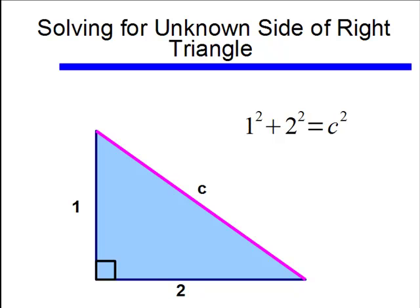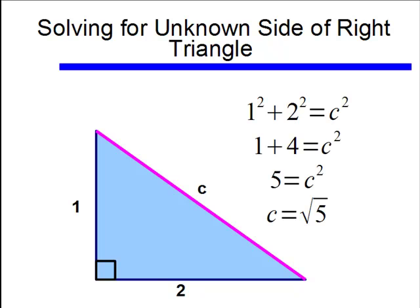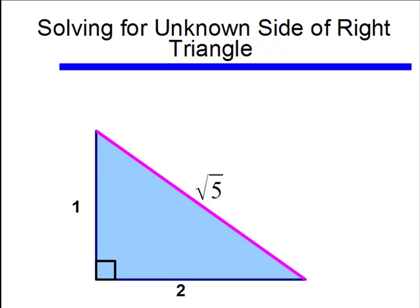All we would do is plug in 1 and 2 into our equation, and have 1 squared plus 2 squared equals c squared. And going ahead and solving for this, we would find the length of the hypotenuse is square root of 5. Again this should all be review.